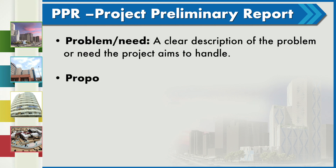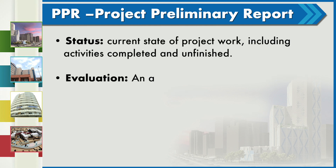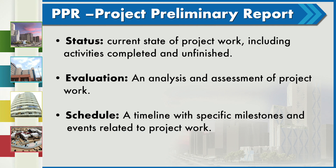Preliminary project reports should include: identification of the problem — a clear description of the problem or need the project aims to handle; proposed solution — a brief description of how to address the problem; methodology — work effort analysis and summary of relevant work; status — the current state of project work including completed and unfinished activities; evaluation and analysis; and scheduling — a timeline with specific milestones and events.